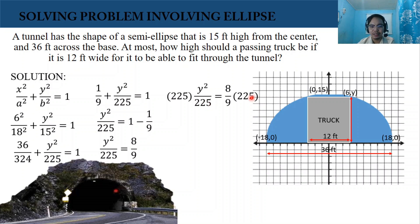Then on the right side, we're also going to cancel because 225 can be divided by 9. So 225 divided by 9 is 25. So we have y squared equals 8 times 25, and y squared equals 200.